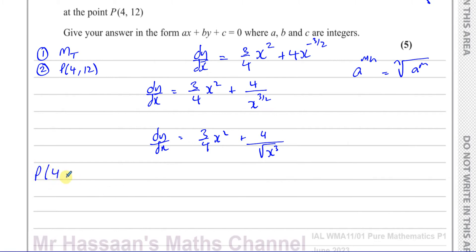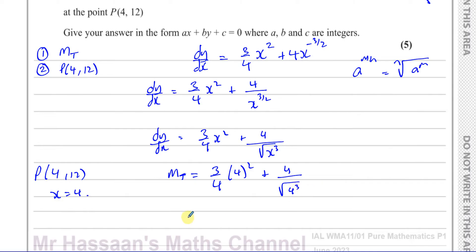Taking P as (4, 12), x equals 4 at this point. So the gradient of the tangent is: three quarters times 4 squared plus 4 over the square root of 4 cubed. That gives three quarters times 16 — one of the fours cancels — so 12, plus 4 over the square root of 64, which is 8. So 4 over 8 is one half. Therefore the gradient of the tangent is 12 plus one half, which is 25 over 2.